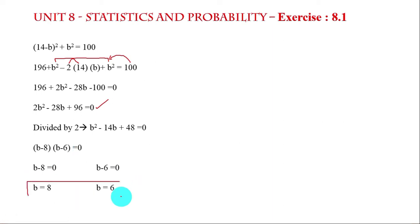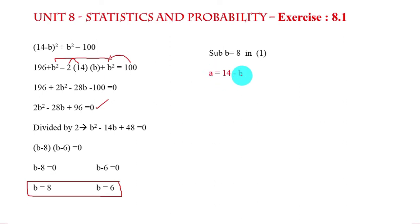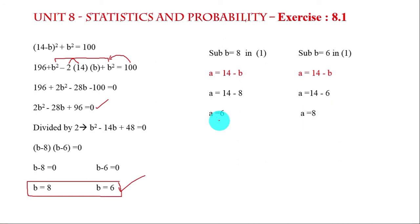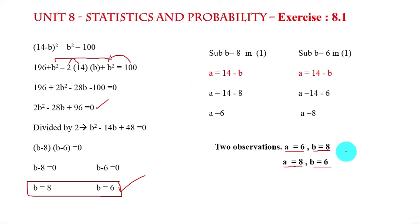If b equals 8, then from equation 1 a equals 14 minus 8 equals 6. If b equals 6, then a equals 14 minus 6 equals 8. So the two remaining observations are 6 and 8. That's the result.